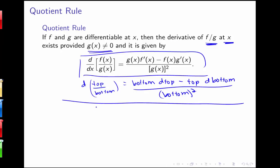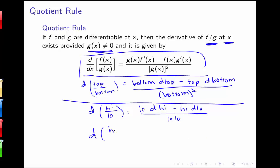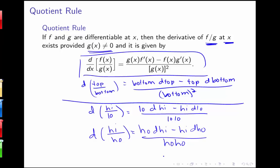There are a few mnemonic devices for remembering this rule. I always think of it as: bottom times derivative of top, minus top times derivative of bottom, all over the bottom squared. You can also think of it as "low d high minus high d low, all over low low," or even the song: "low d high minus high d low, square the bottom and away we go." There's also "ho d high minus high d low, all over ho ho" — like Santa.